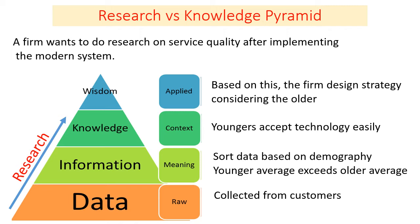After sorting or arranging the data based on some features, it tells us about something and becomes information. If we collect the relevant information for the purpose of drawing a conclusion, it becomes knowledge. Knowledge means relevant information which helps us arrive at a conclusion. After that, if we apply a solution — if we design a strategy to solve the problems identified at the knowledge level — it becomes wisdom. Wisdom is the application of strategy and techniques for the problems investigated.